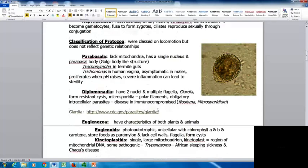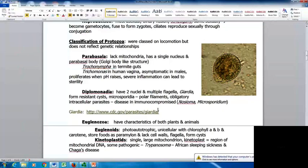Diplomonads have two nuclei and multiple flagella, including Giardia which can form resistant cysts. The Microsporidia have polar filaments, are obligatory intracellular parasites, and can cause disease in the immunocompromised, like Nosema and Microsporidium.